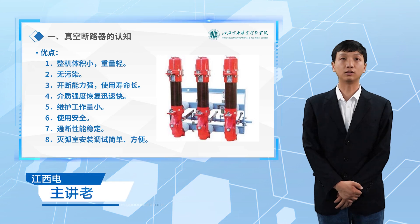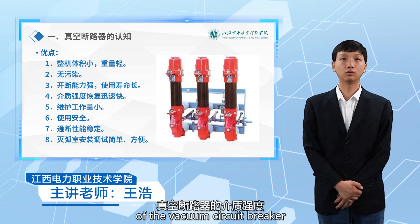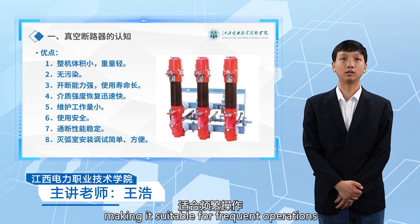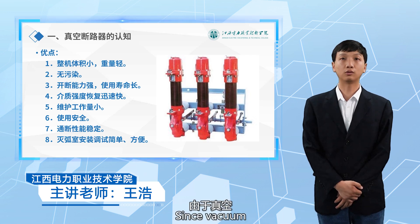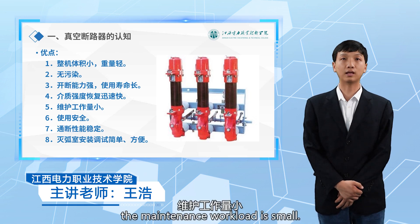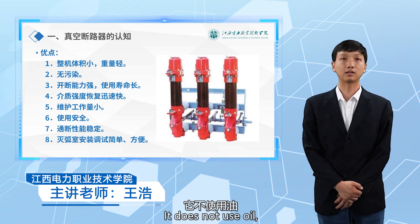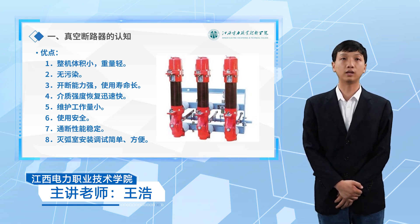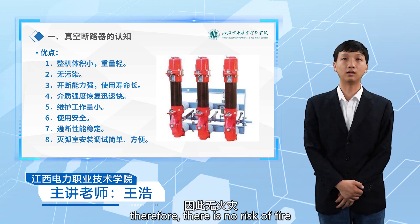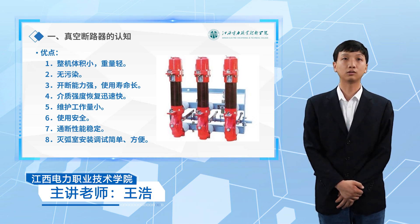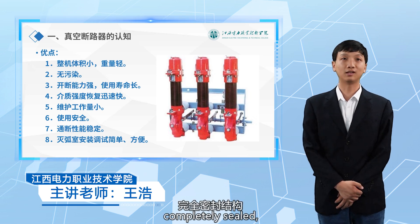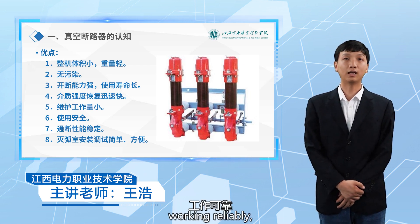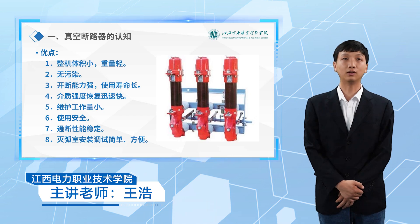In addition, the dielectric strength of the vacuum circuit breaker recovers quickly, making it suitable for frequent operations and multiple reclosing. Since vacuum does not have aging issues, the maintenance workload is small. It does not use oil, and during the braking process no high voltage is generated, so there is no risk of fire or explosion. The contact part is completely sealed, unaffected by external environmental conditions, working reliably with stable switching performance.